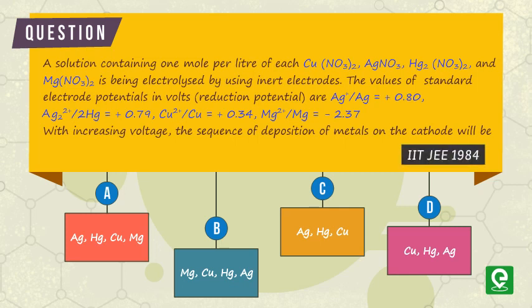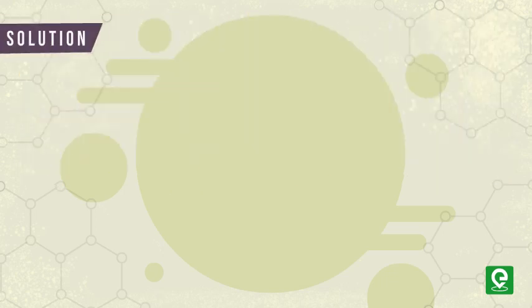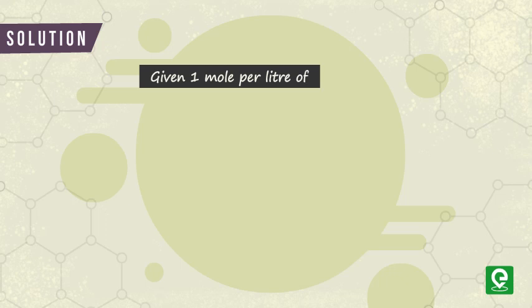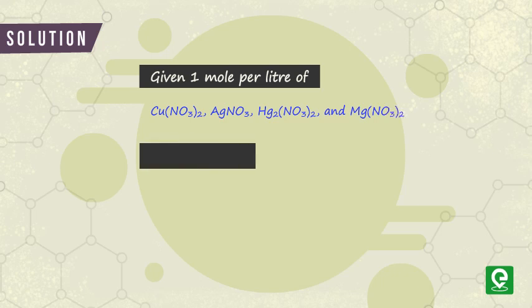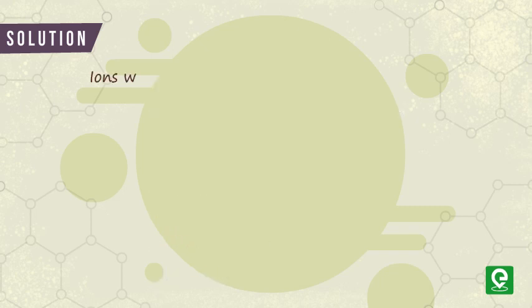Solution: In the question, we are given one mole per liter of each of the following four compounds: Cu(NO₃)₂, AgNO₃, Hg₂(NO₃)₂, and Mg(NO₃)₂. The reduction potential of all four metals is given.